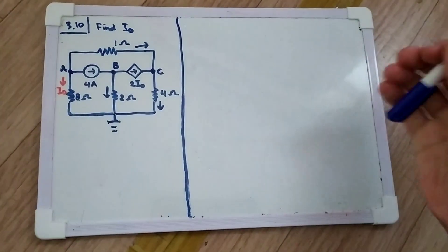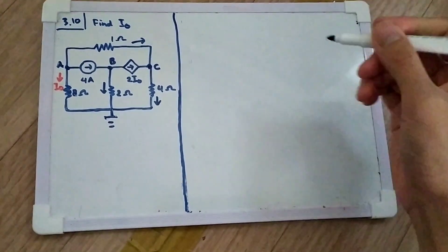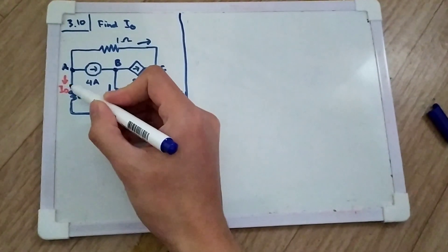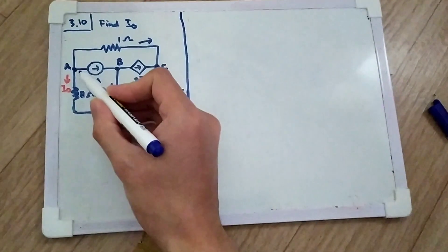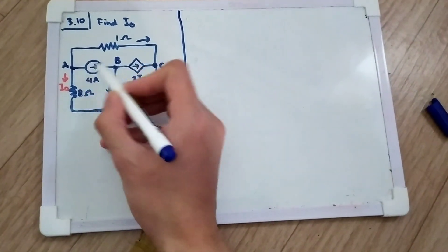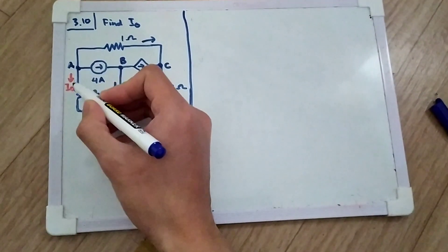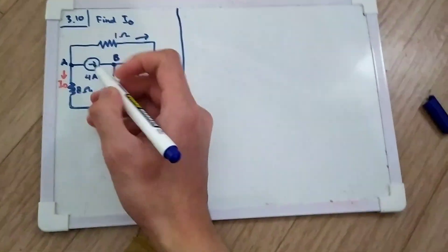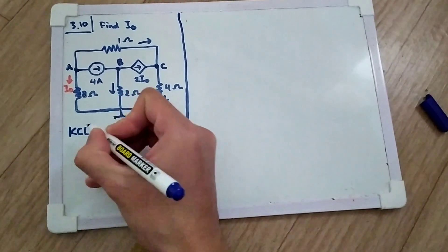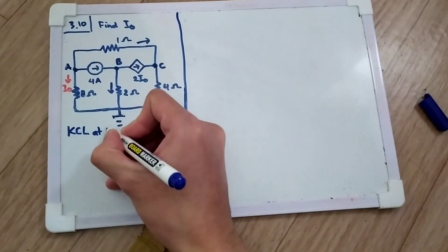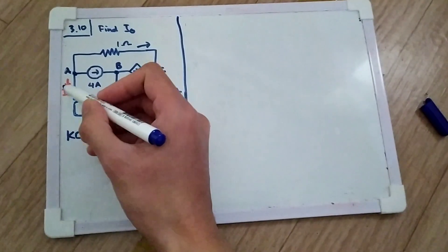This is problem 3.10 of Sadiku and we are asked to find I0. I set this as ground and named three nodes: node A, node B, and node C. Because we are finding I0, I will start at node A.